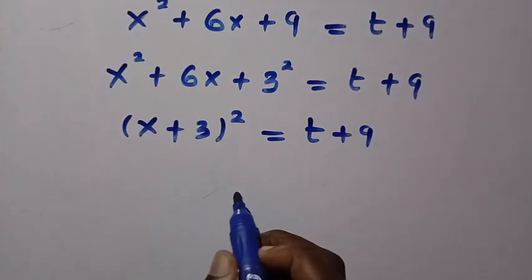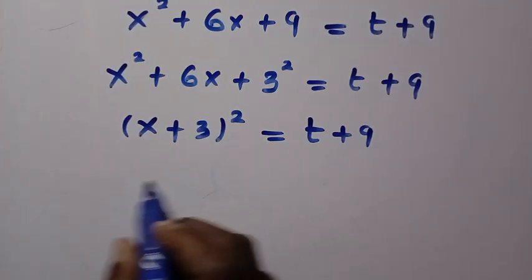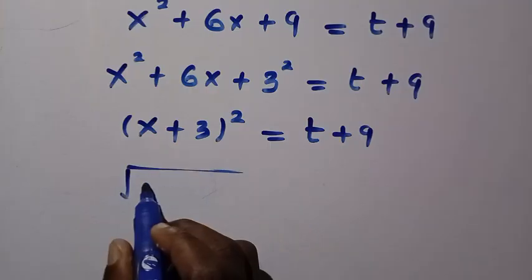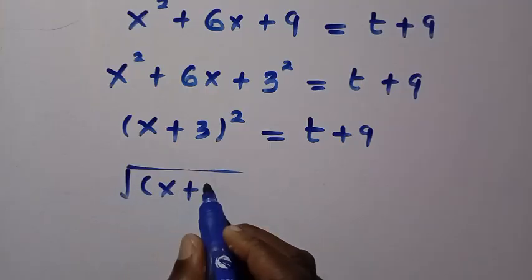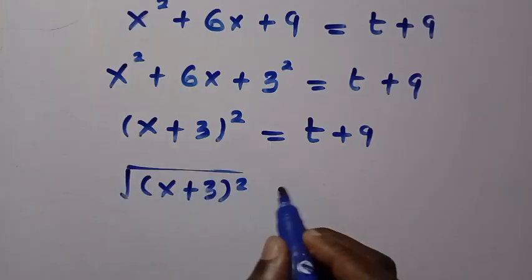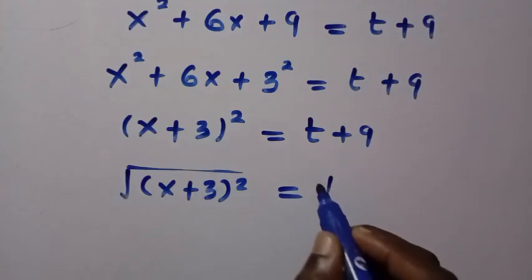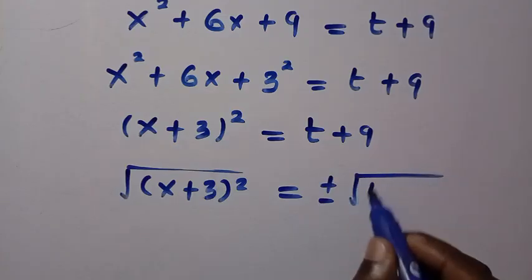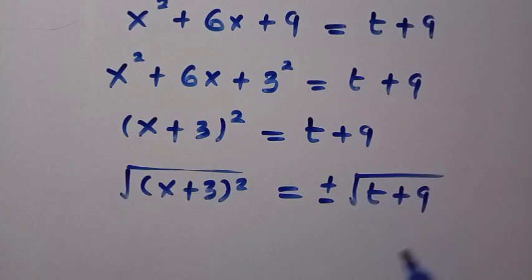From here, let's take the square root of both sides. By taking the square root, we have √[(x + 3)²] equals, on the other side, plus or minus √(t + 9).